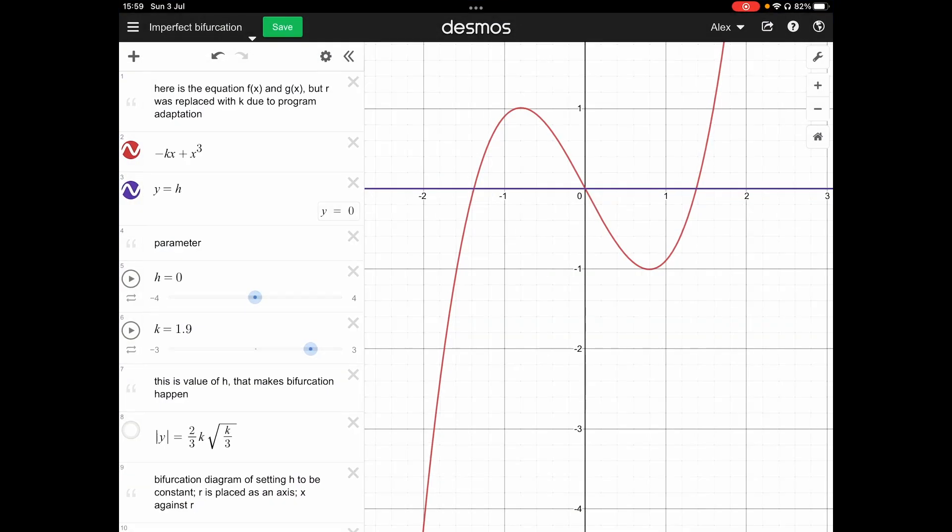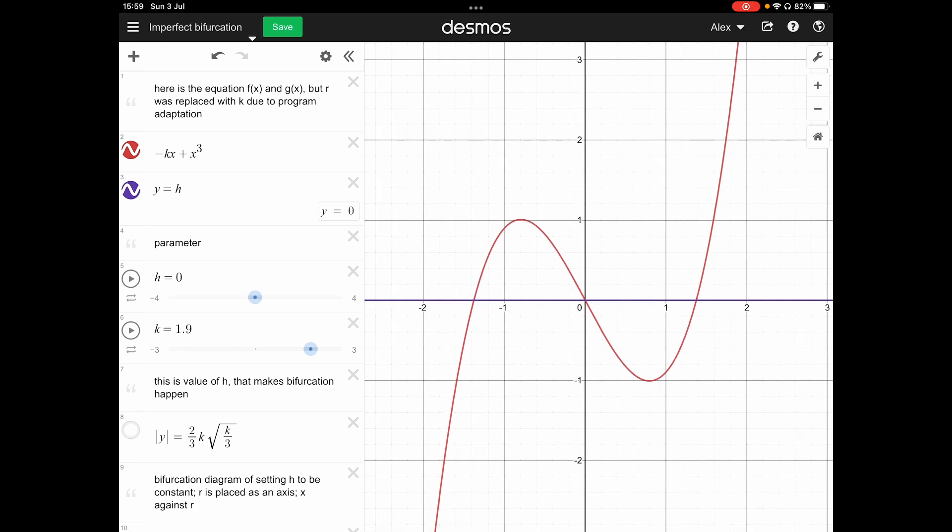So for further visual aids, let's go to the Desmos, like the graphing calculator. Here in the graph, it's having a parameter of h equal to zero and r equal to 1.9.